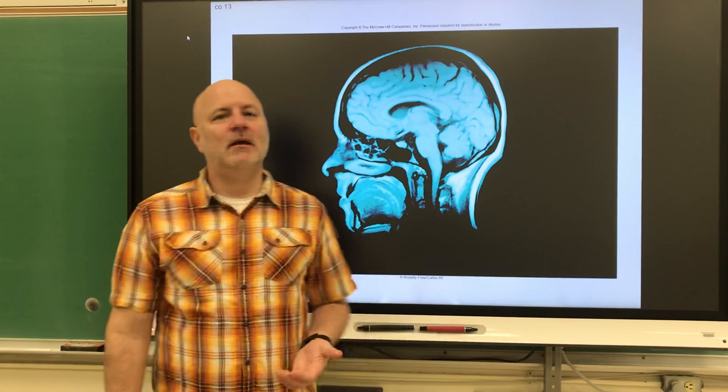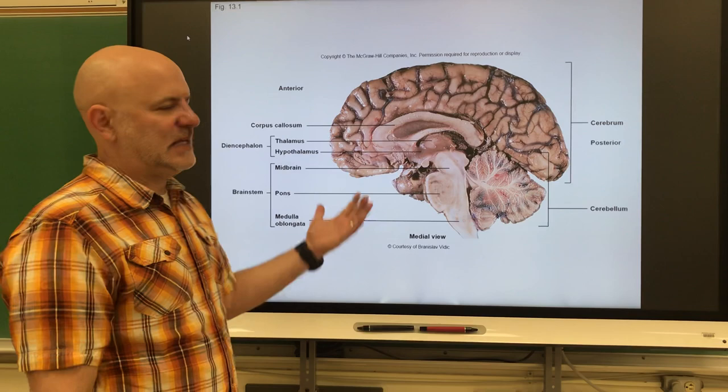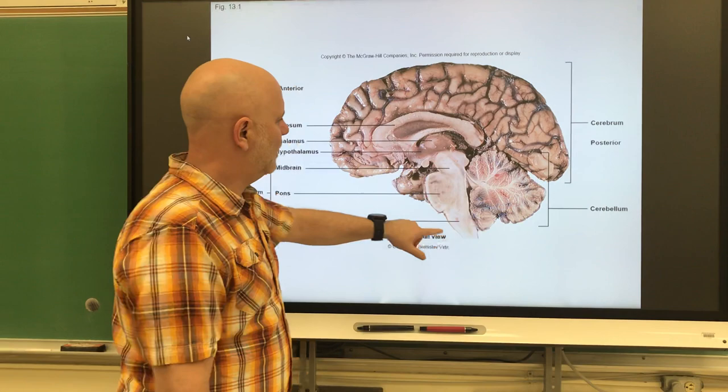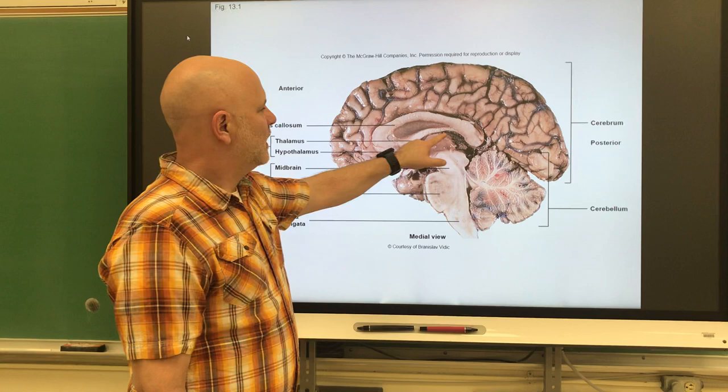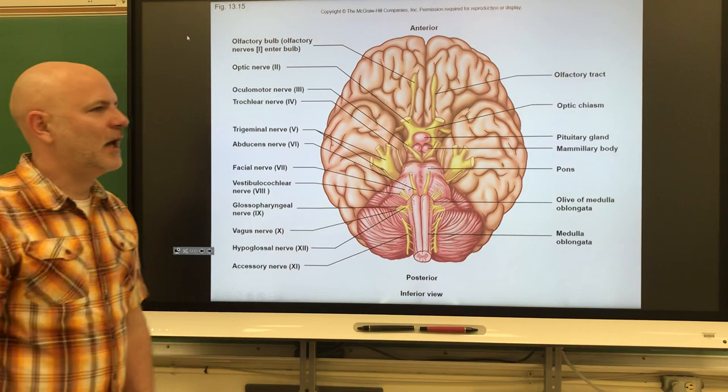We're going to start Chapter 13, which deals with the brain and cranial nerves. Looking at a sagittal section of the human head and brain, we can identify major parts: the cerebrum, cerebellum, brain stem (which includes the midbrain, pons, and medulla oblongata), the diencephalon (thalamus, hypothalamus, epithalamus), corpus callosum, and pituitary gland.